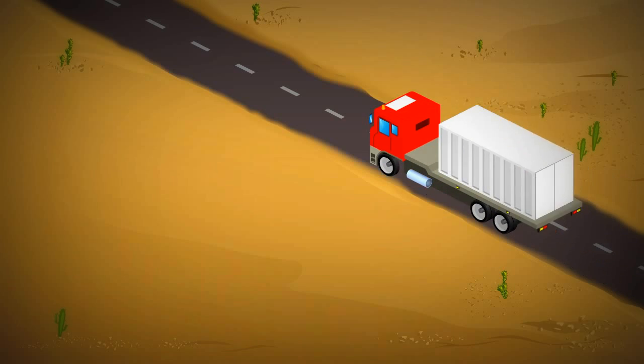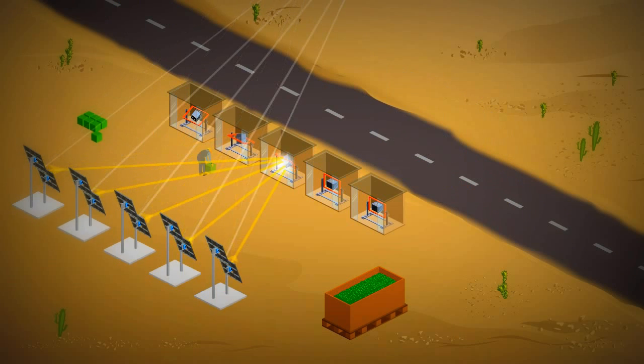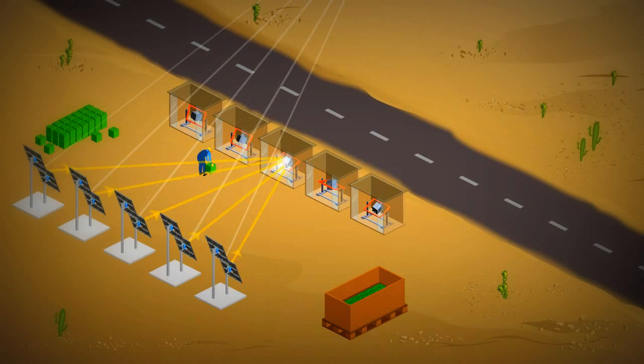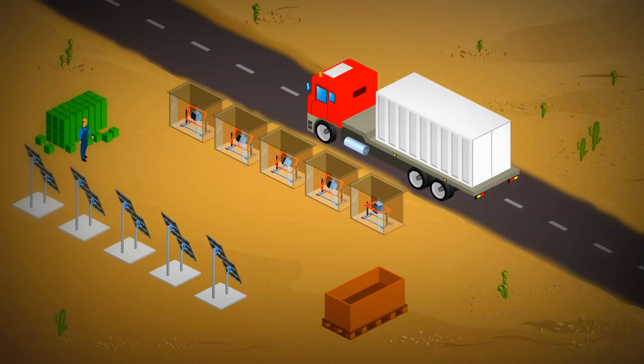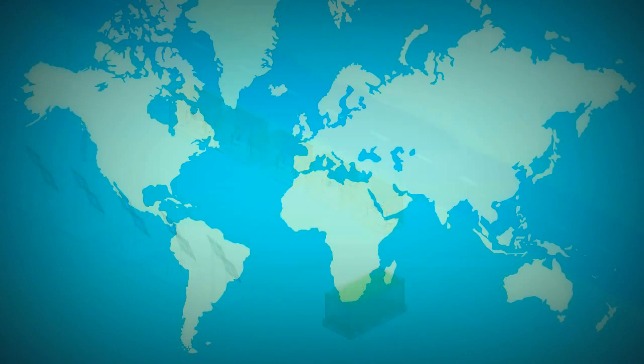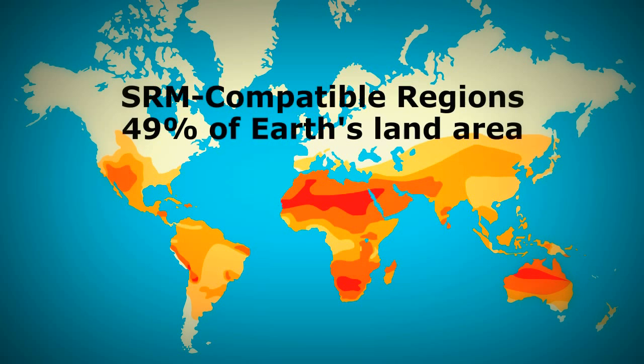For the developing world, SRM is even more important. It provides a way for remote regions to capture solar energy to make valuable products. And unlike making solar electricity, capital costs are minimal and energy storage and transmission costs are zero. SRM can be profitably implemented in areas where solar electricity, farming, or most other economic activity is not viable.